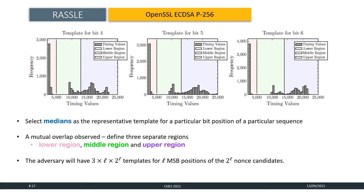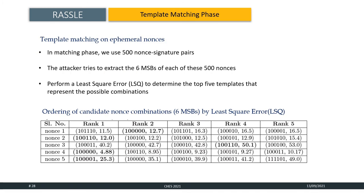In the template matching phase, we choose 500 nonce signature pairs for a randomly chosen ECDSA signing key. The attacker tries to extract the 6 MSBs of each of these 500 nonces. For a particular bit position, we have 2 to the power 6 templates each having 3 regions. Next, we select the median which has the least difference with the actual observed timing value. Finally, we perform a least square error method to determine the top 5 templates that represent the possible combinations for the 6 MSBs. Therefore, for 500 nonces, we have 500 cross 5 candidate combinations of the 6 MSBs. The table shows the ordering of candidate nonce combinations of the 6 MSBs achieved by least square error.